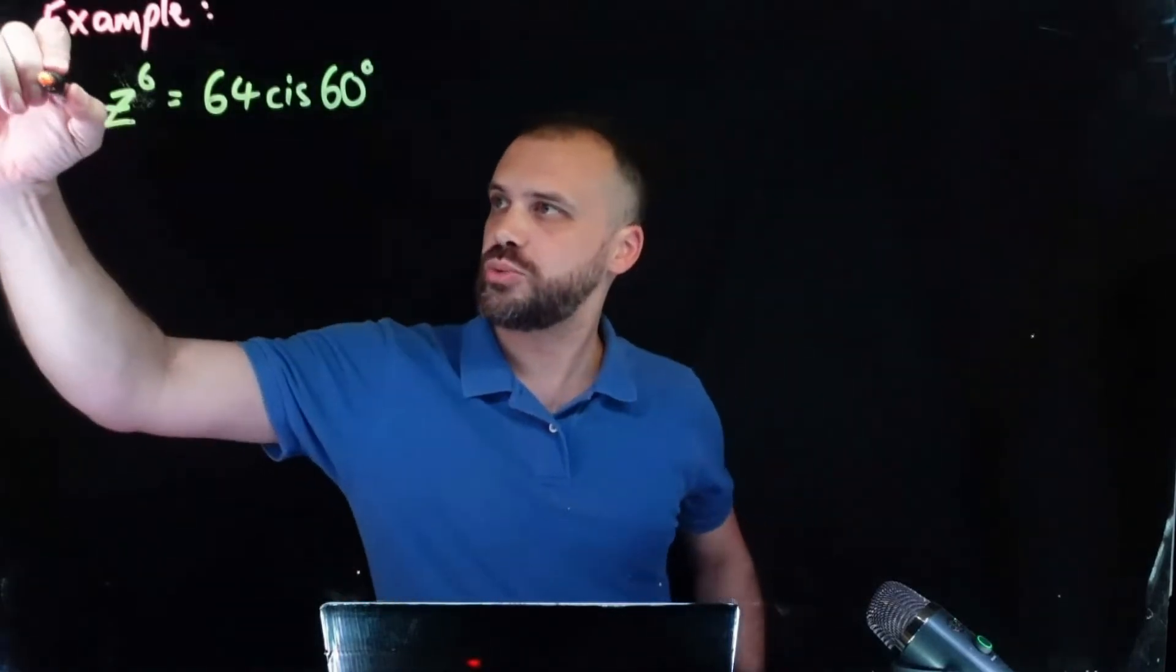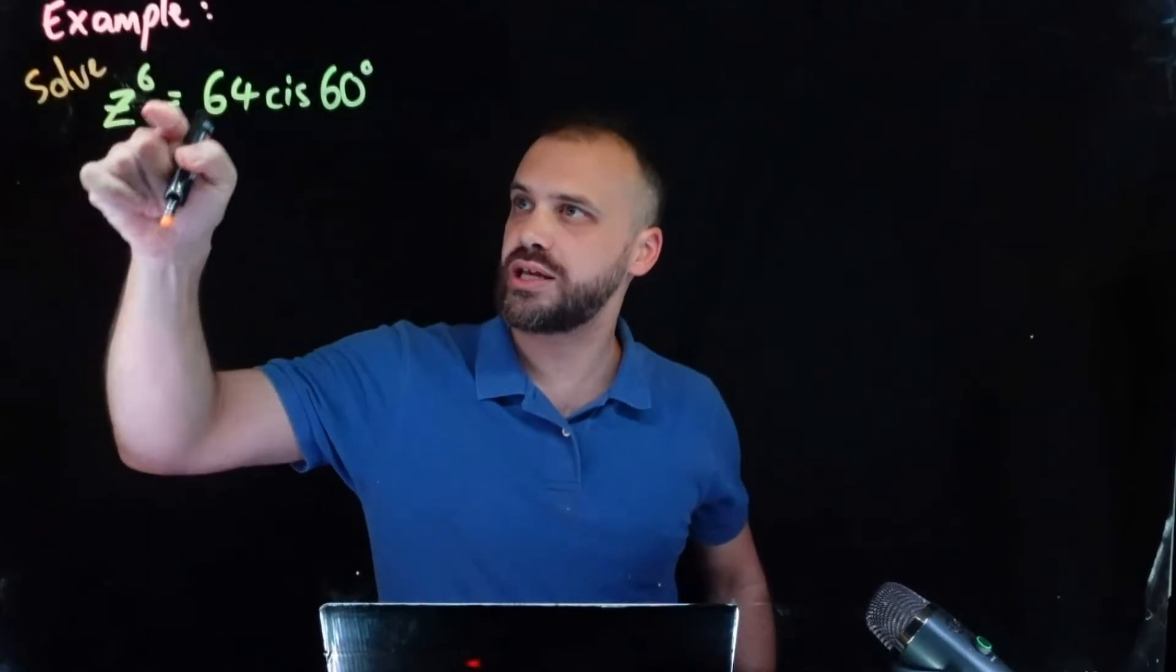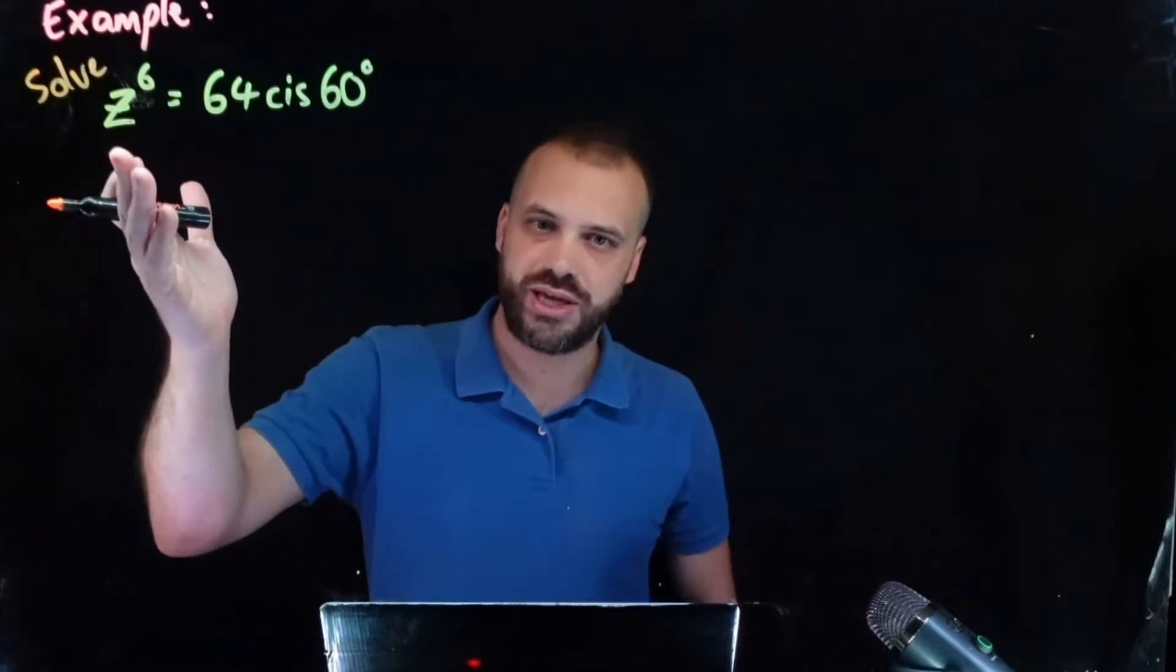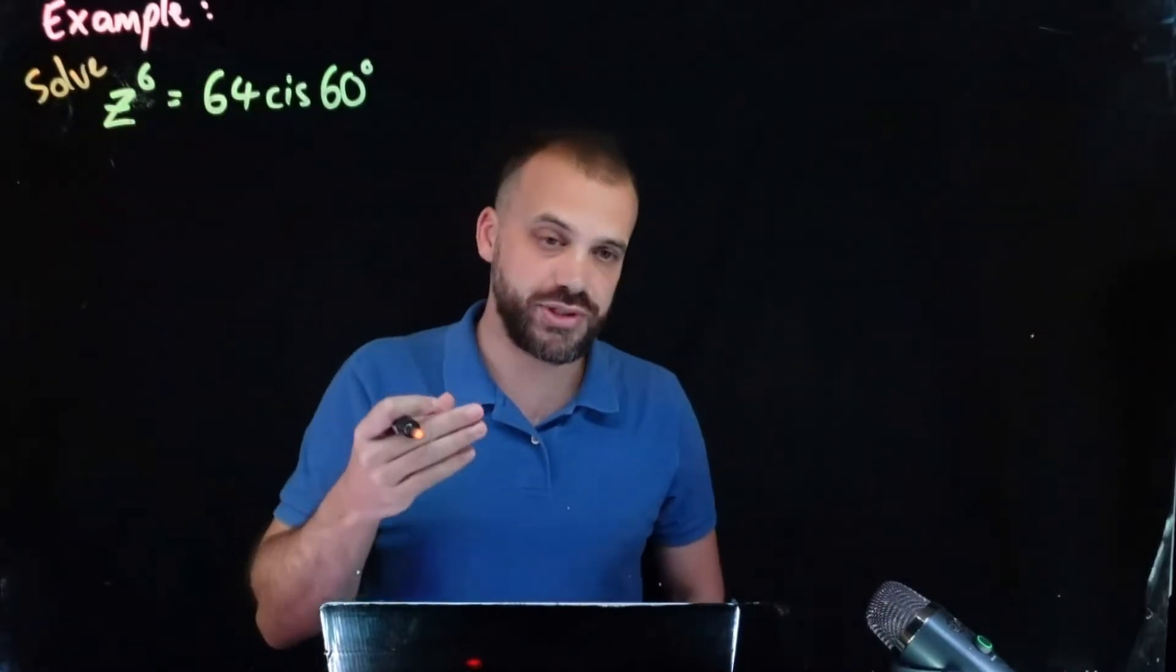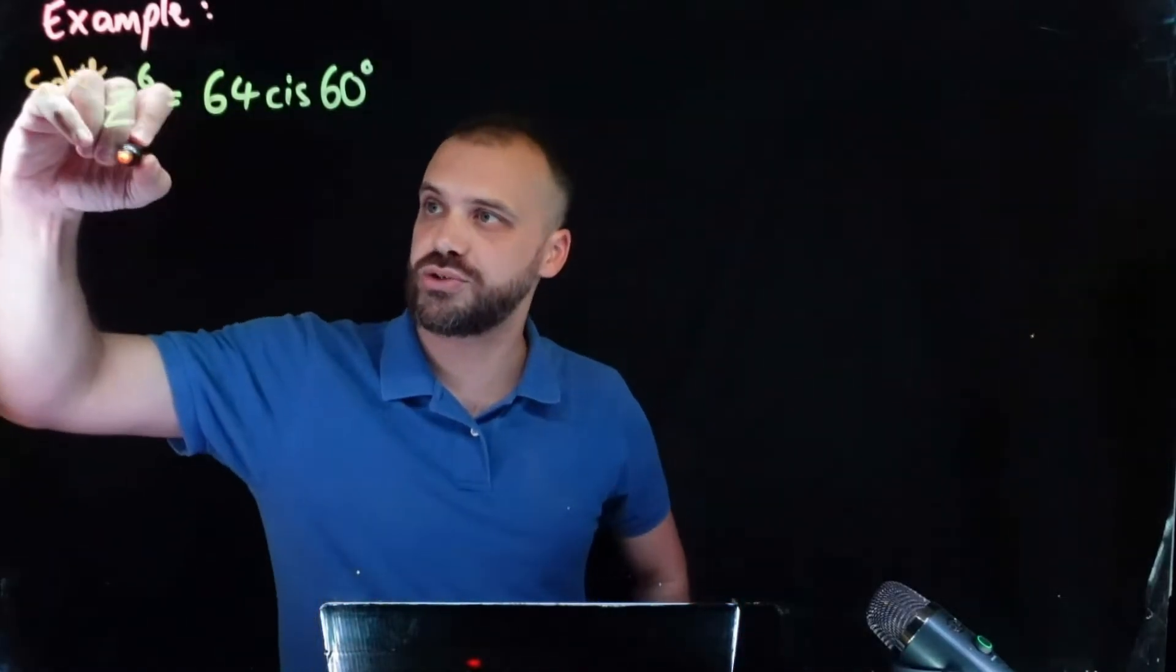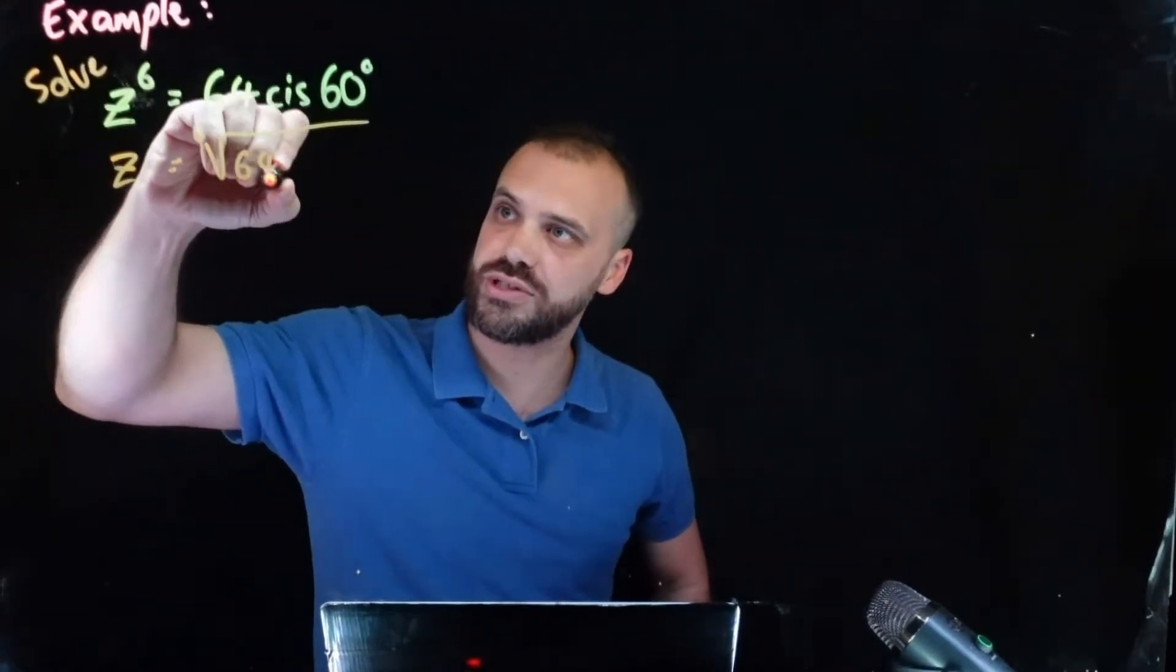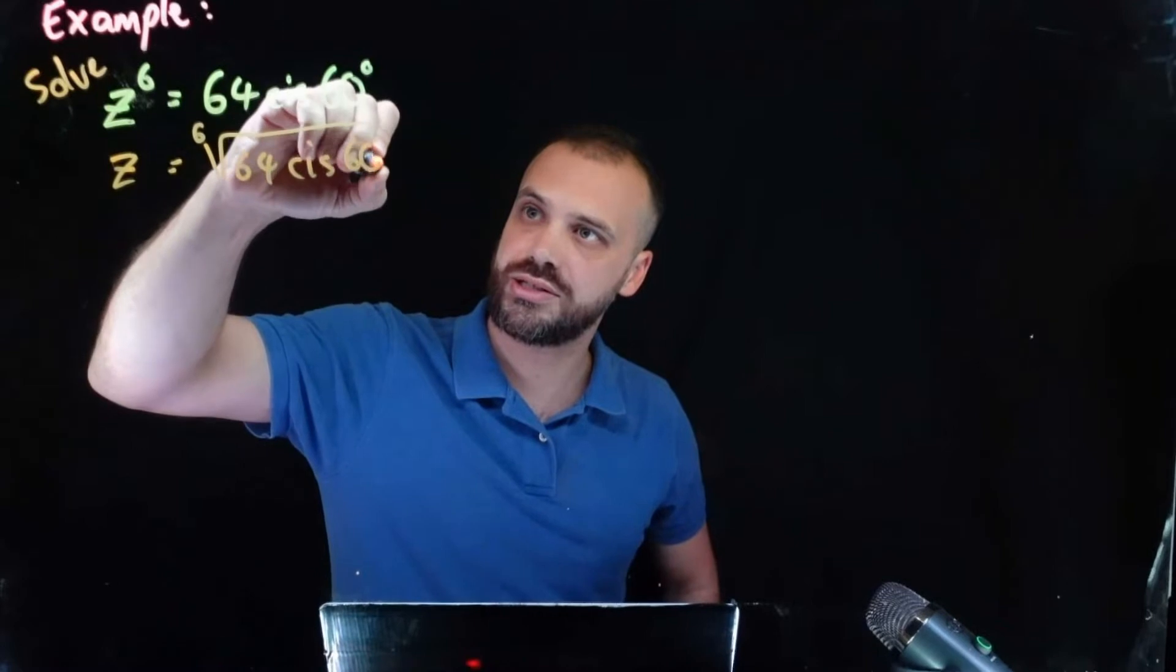So how do we solve z to the sixth equals 64 cis 60? We want to know what z is and at the moment z is being raised to the power of six. So let's take the sixth root of both sides. So z equals the sixth root of 64 cis 60.